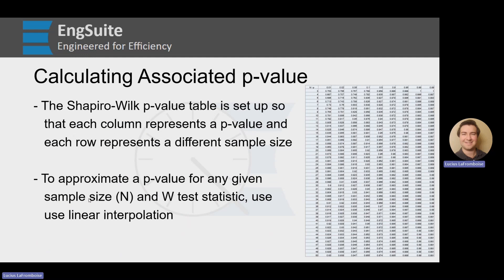This table is kind of similar to the AI constant table, except that each column now represents a p-value, and each row represents a different sample size. So to approximate a p-value for any given sample size and W test statistic, we're going to use linear interpolation.